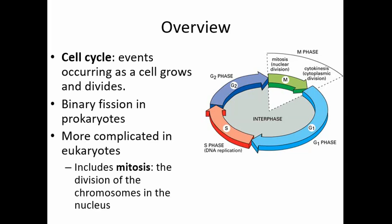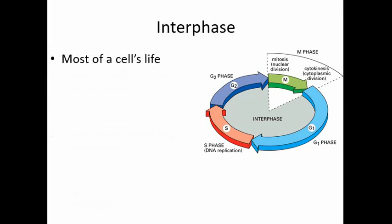In eukaryotes, it includes mitosis — the division of the chromosomes in the nucleus of the cell. In this diagram, we can see that most of the cell's life is spent in interphase, which includes several other phases. During this part of the cell's life, it carries out the functions needed to live and grow, including making proteins.